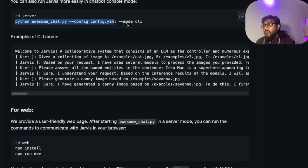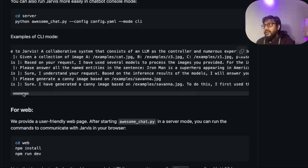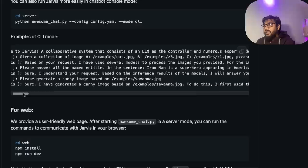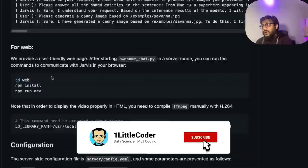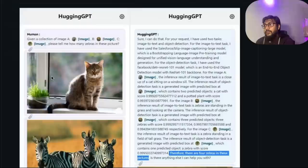You can also run it in a CLI mode. All you have to do is call the server, set the server and invoke the command. And then you can say welcome to Jarvis, a collaborative system that consists of an LLM as a controller and numerous expert models as collaborative executors. Jarvis can plan tasks, schedule HuggingFace models, generate friendly responses based on your request, and help you with many things. You can have a chat-based communication with Jarvis.